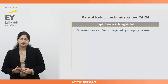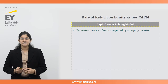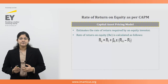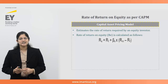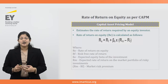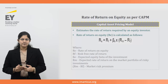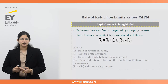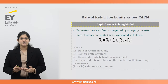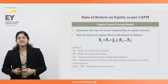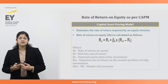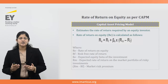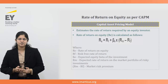The capital asset pricing model (CAPM) is a model for estimating the rate of return required by an equity investor. Under the CAPM, the required rate of return on equity is: RE = RF + BE × (RM − RF), where RE is the rate of return on equity, RF is the risk-free rate of return, BE is the expected equity beta of the investment, RM is the expected rate of return on the market portfolio of risky investments, and RM − RF is the market risk premium. So as per the CAPM, the return on equity required is the risk-free rate plus the equity beta multiplied by the market risk premium.